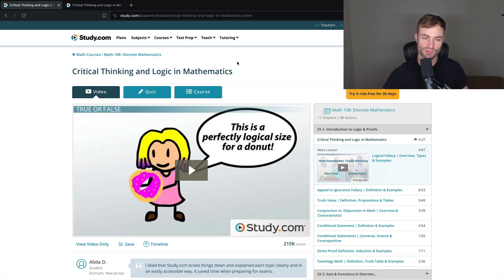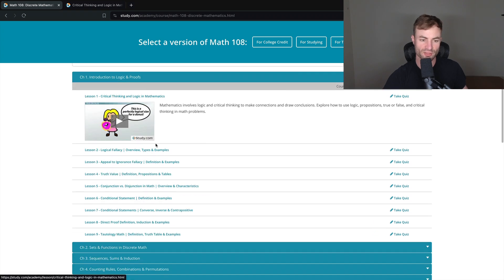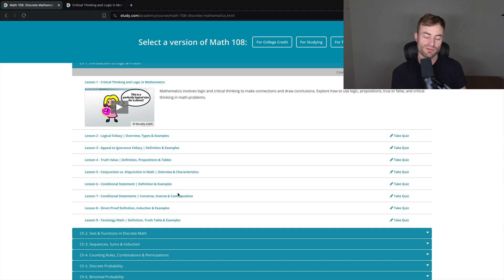Every course has chapters and lessons. There's nine lessons in chapter one. This is logic and proofs, which is one of the backbones of discrete math. In chapter one, you have critical thinking, logic and mathematics, logical fallacy, appeal to ignorance fallacy, truth value, conjunction versus disjunction, conditional statement. All this might sound overwhelming, but I guarantee you, you might actually find it fun. It's hard, but I personally think you'll find it fun.